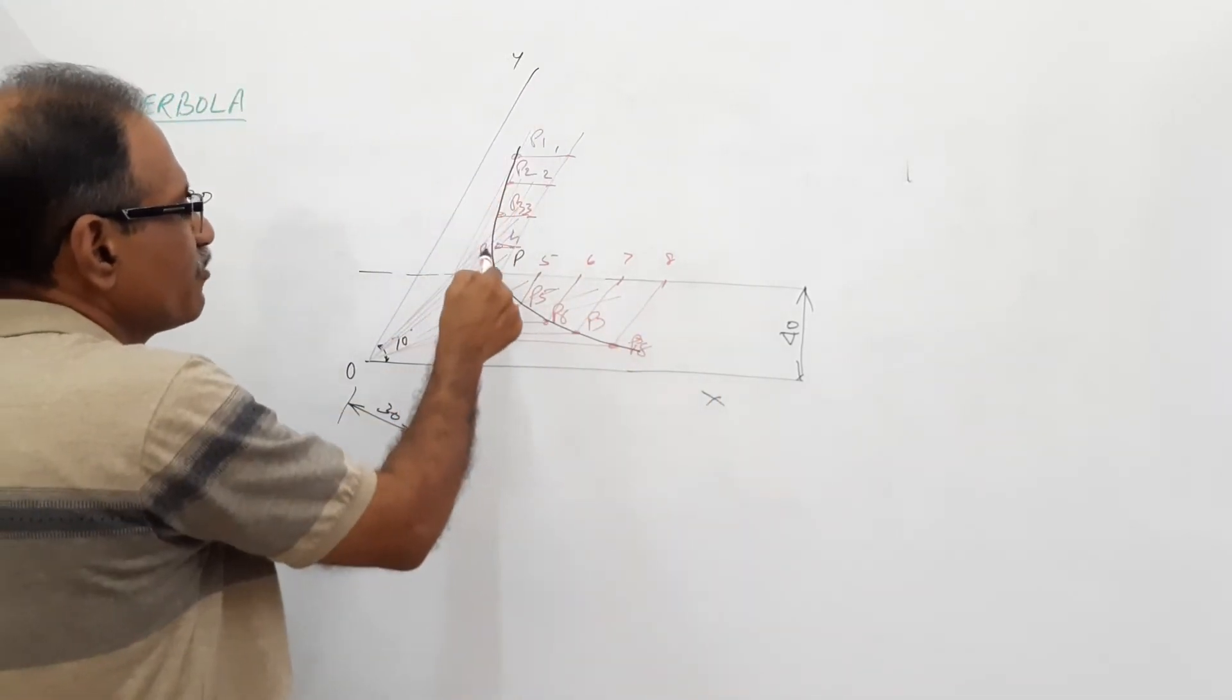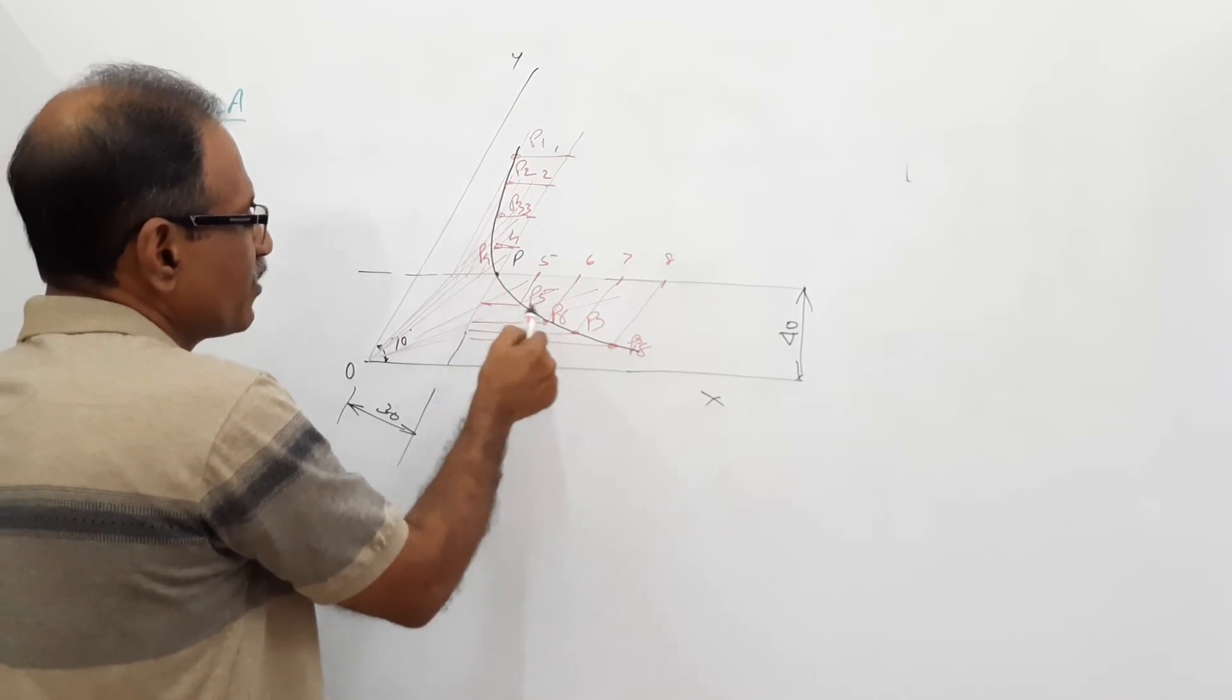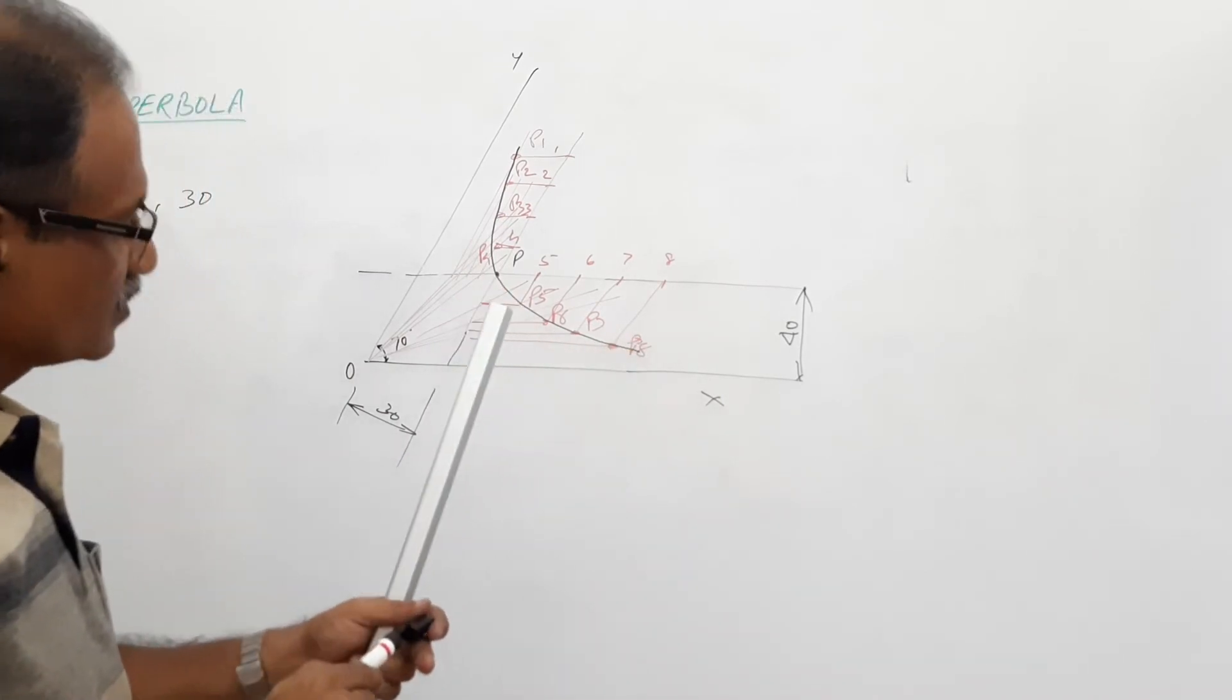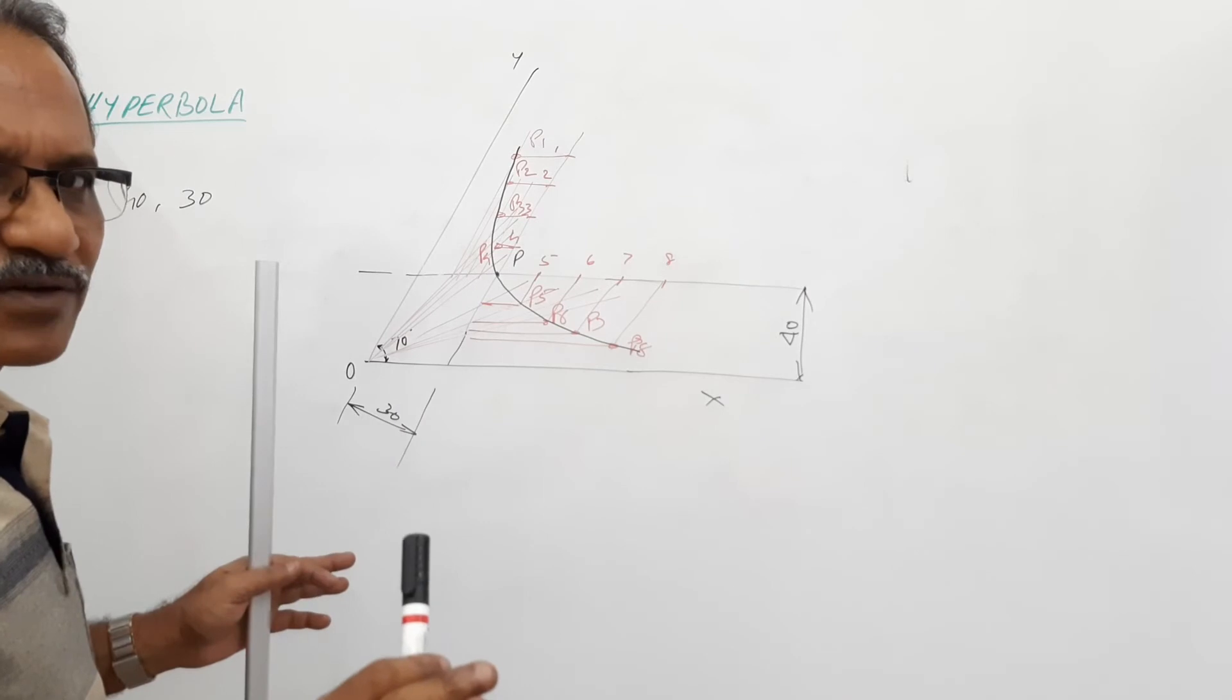P1, P2, P3, P4 should pass through this, P5, P6, P7, P8. Agreed. Same procedure, exactly same procedure.